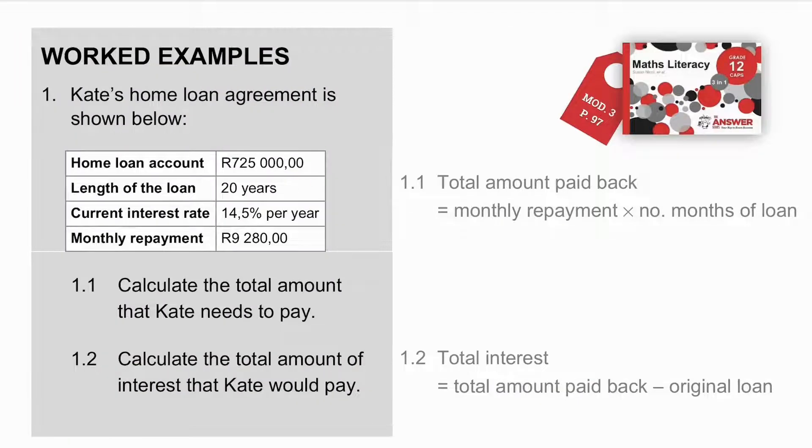Let's look at some worked examples. Kate's home loan agreement has shown the loan account is for R725,000, length of the loan 20 years, interest rate 14.5% per year, with a monthly repayment of R9,280. The question says, calculate the total amount that Kate needs to pay.